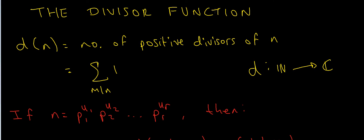In this video I want to talk about the divisor function again. Recall that the divisor function d(n) is just the number of positive divisors of n. So if n were equal to 4, well 4 has 3 divisors, namely 1, 2 and 4, so the total number of divisors is 3. We write this in shorthand notation as the sum over all divisors m of n equals 1.